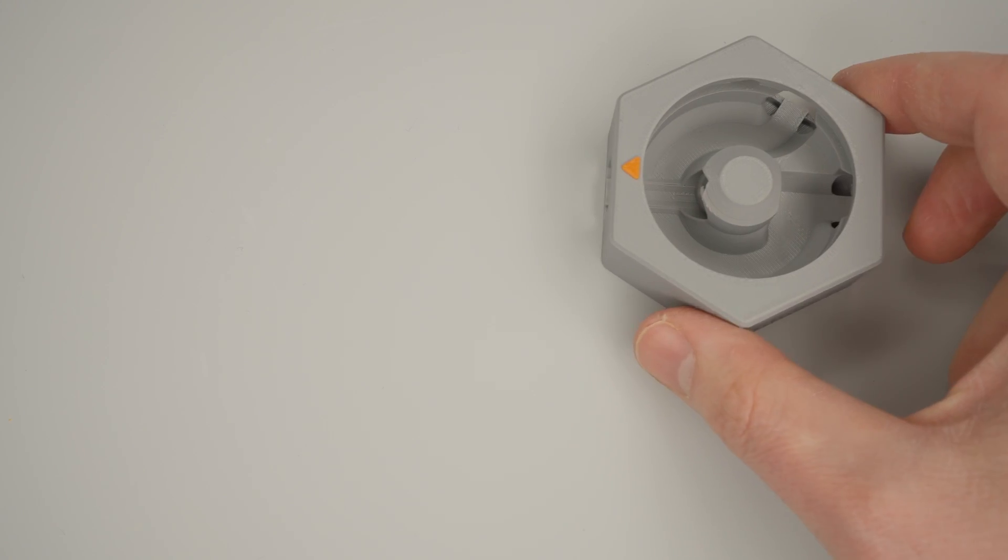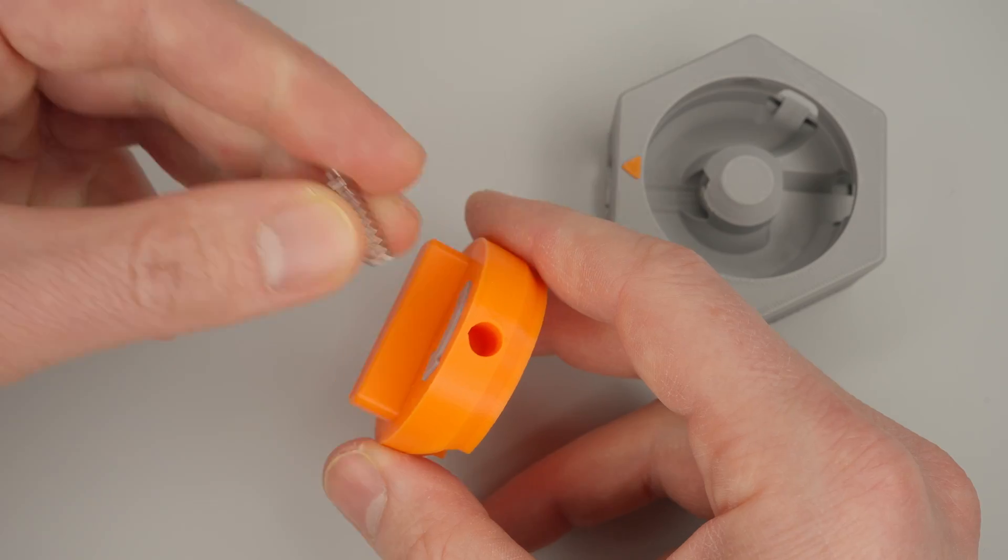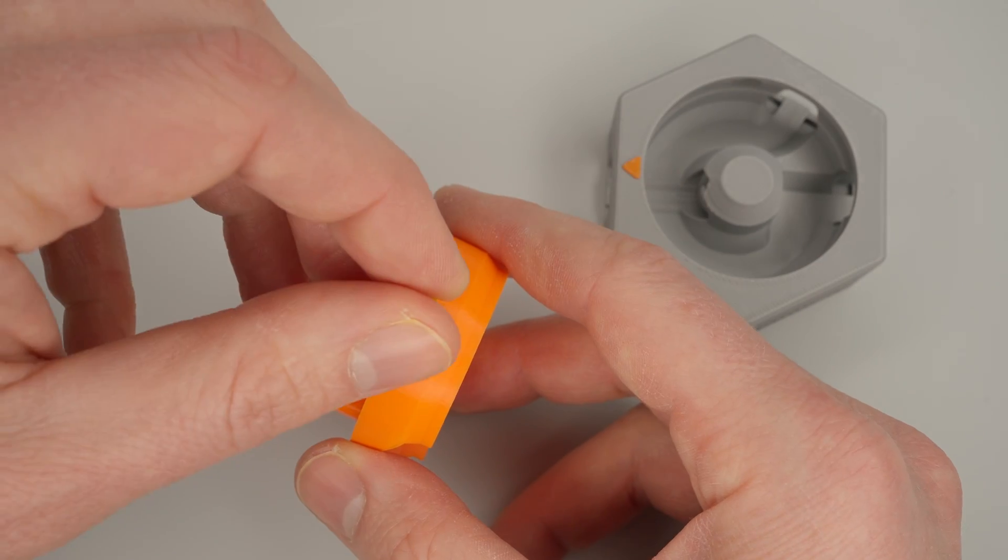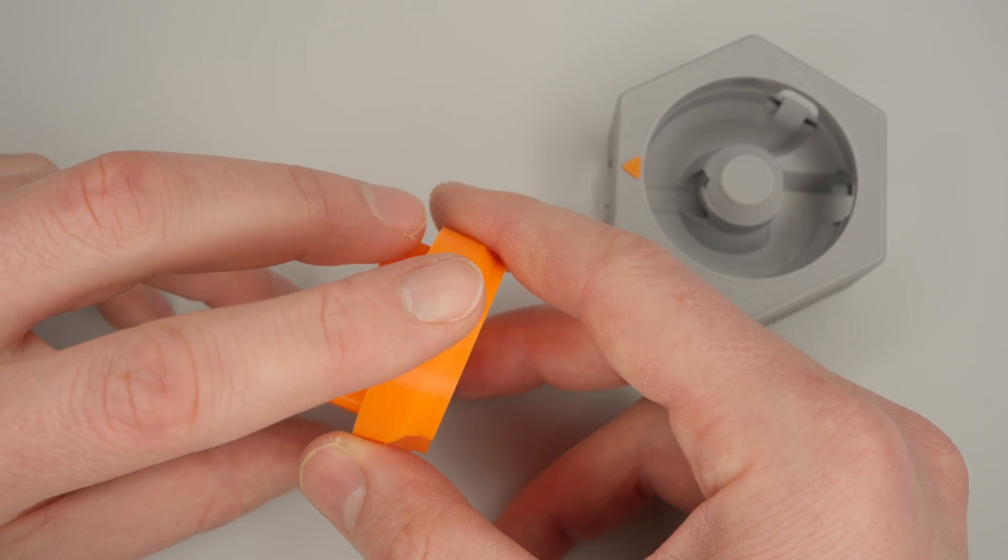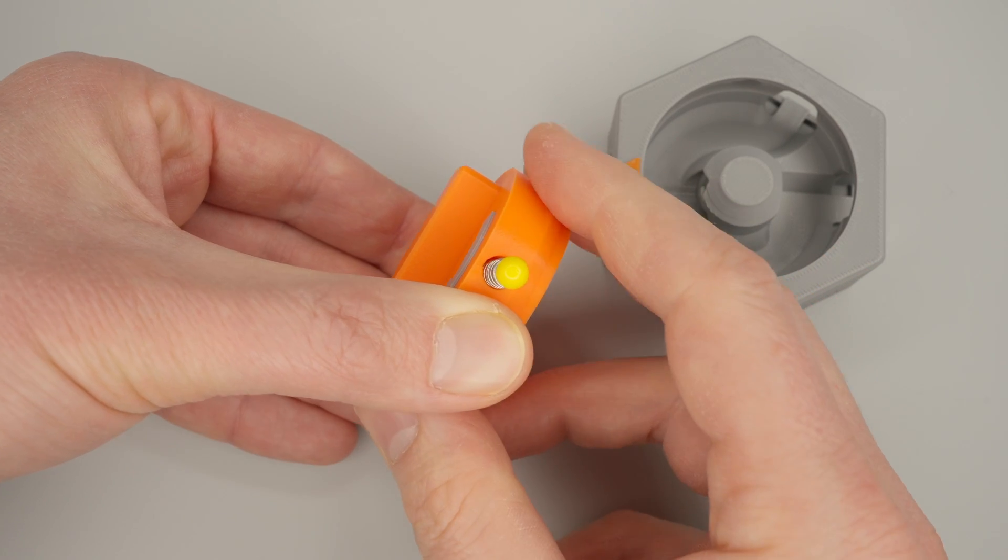Let's continue with the assembly process. We'll take the knob and insert a coil spring into one of the holes, then we'll place a 6mm ball on top and press it in. We'll repeat this process on the other side as well.